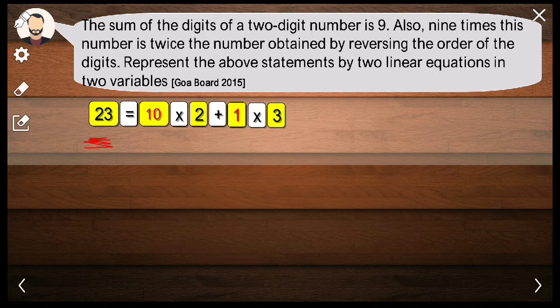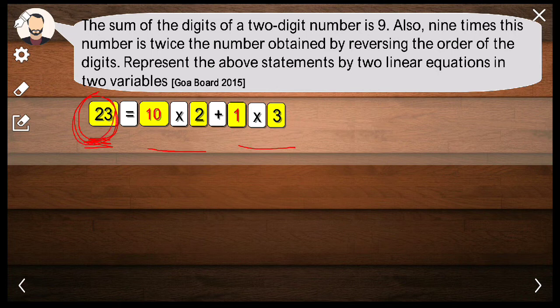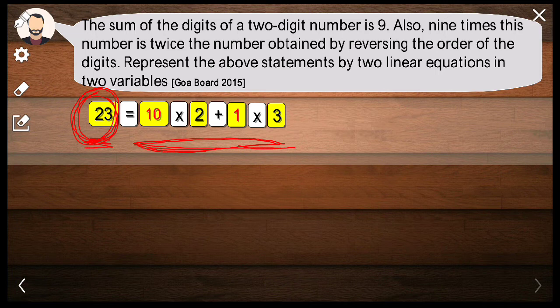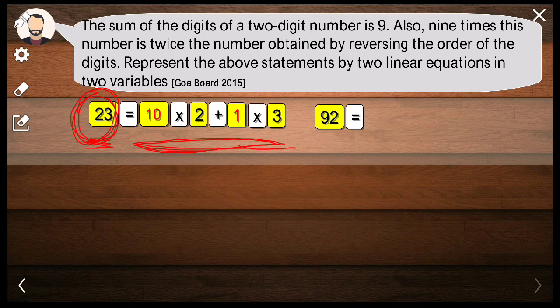That's the reason you write the number 23 as 10 multiplied by 2 plus 1 multiplied by 3. Whenever we speak, we say 23 as a number, but here they are just digits kept together which make up that number. Mathematically, the number is written in this form: 10 multiplied by 2 plus 1 multiplied by 3.